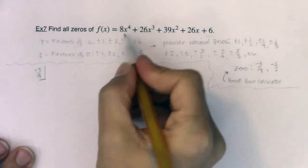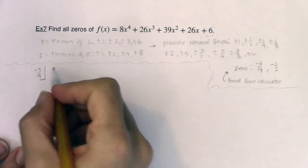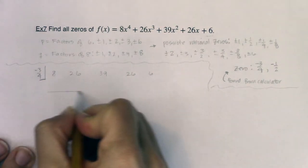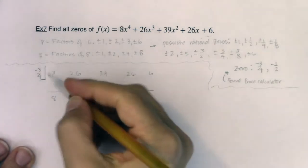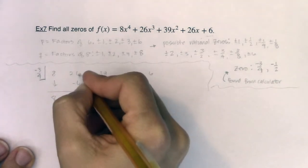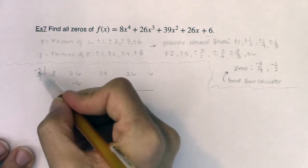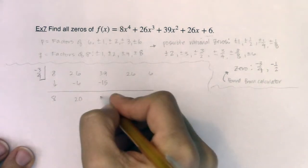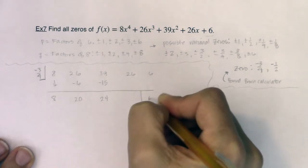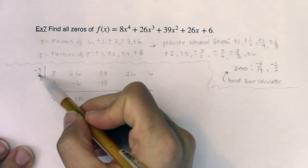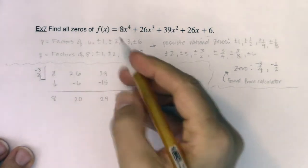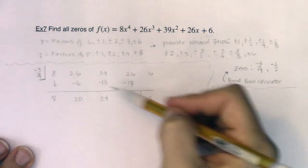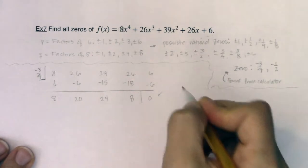Watch what happens when you use these fractions with synthetic division. I've got negative three fourths, and my powers of x descend — I don't skip any, don't need any placeholders. Eight comes down. Negative three fourths times eight is negative six. 26 minus six is 20. Negative three fourths times 20 gives me negative 15. 39 minus 15 gives me 24. Negative three fourths times 24 — 24 divided by four is six, times negative three is negative 18. 26 minus 18 is eight. Negative three fourths times eight is negative six. And six minus six is zero — that checks out.